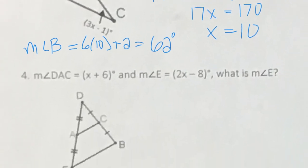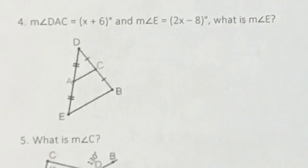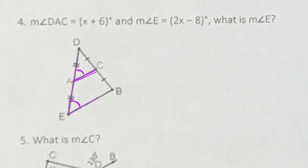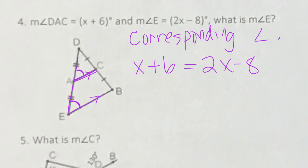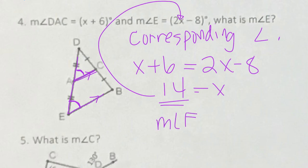Number four has some angles, and this looks like a mid-segment because of the markings on the sides indicating AC is a mid-segment. But we're asked about angles — specifically angle DAC and angle E. One property of mid-segments is that they are parallel to their bases, which means these are corresponding angles. So we set them equal: X plus 6 equals 2X minus 8. Solving for X gives 14, and the measure of angle E is 20 degrees.